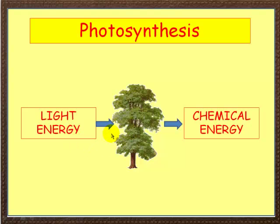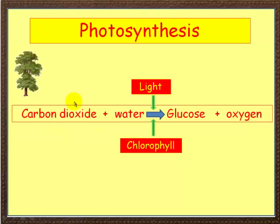Let's look at the equation. This is the basic equation for photosynthesis: carbon dioxide plus water gives glucose plus oxygen. We need light for this process. Another thing that is essential is chlorophyll — a green pigment that gives the plant its green appearance, found inside chloroplasts.